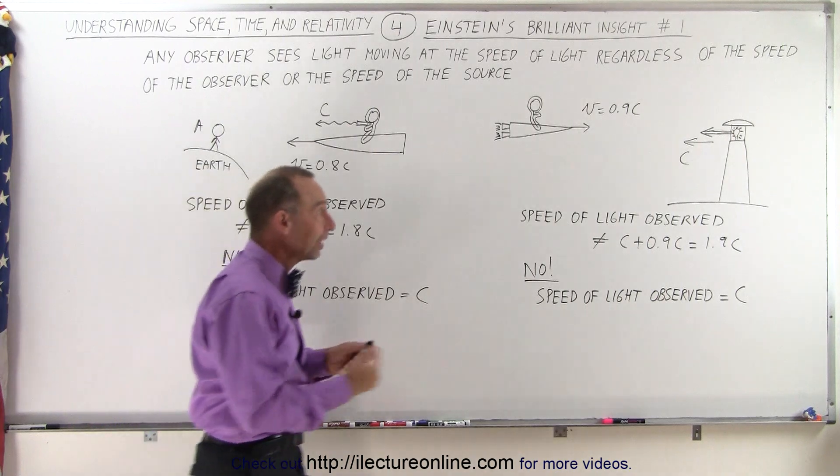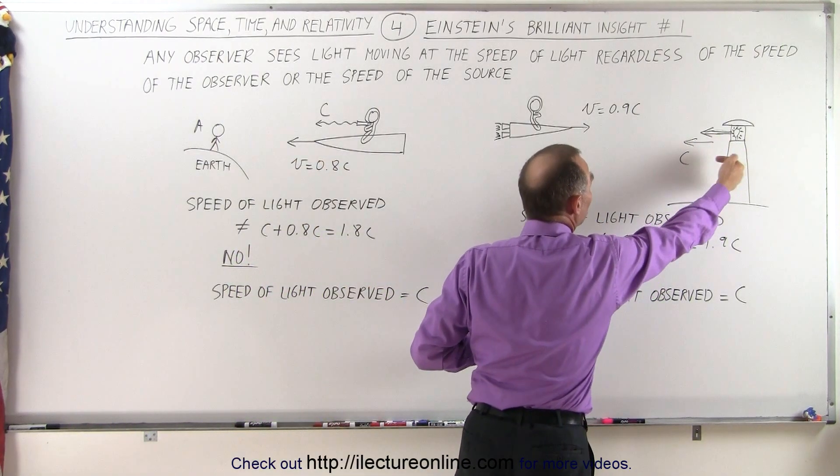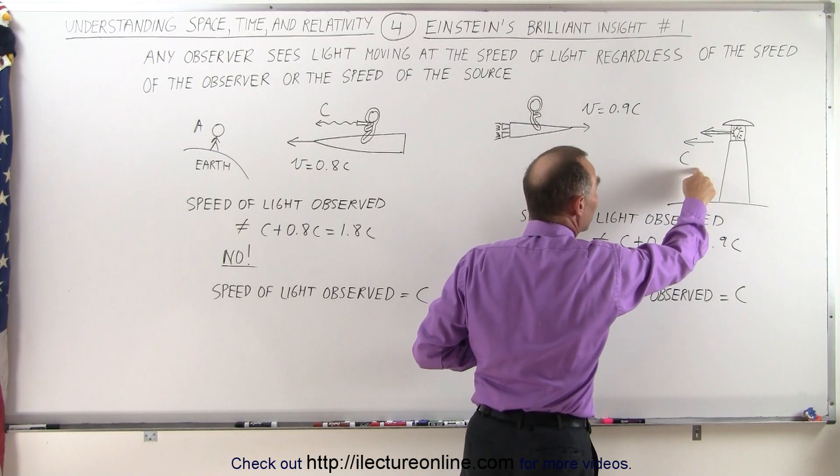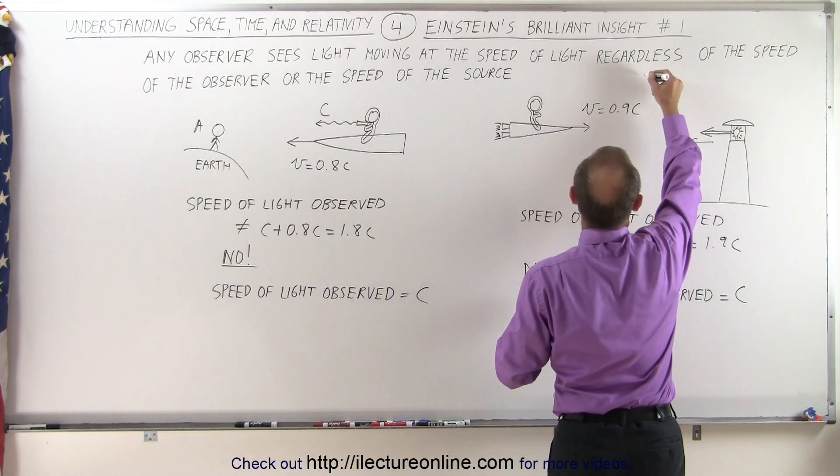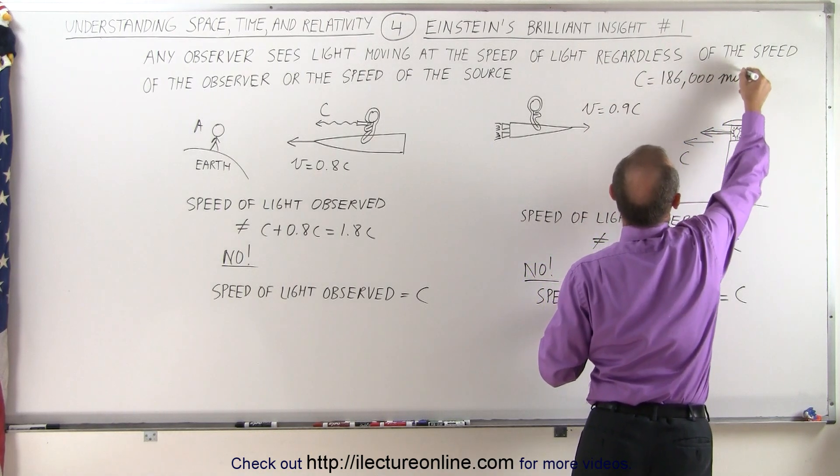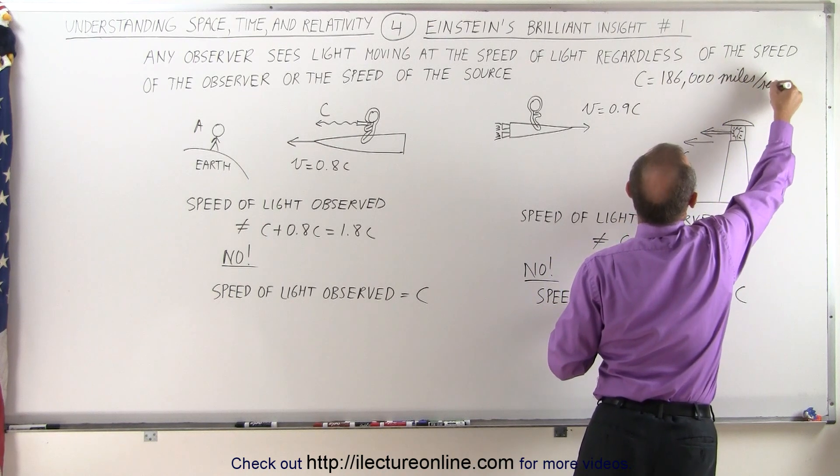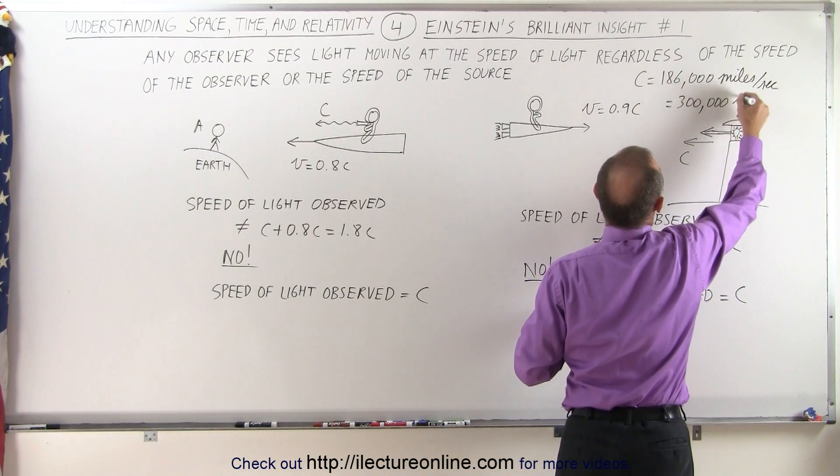In other words, let's say that we have a stationary source putting out a beam of light, moving at the speed of C, so C represents the speed of light. And for those who are not familiar with the speed, it's equal to 186,000 miles per second, which is quite fast, which in kilometers is equal to 300,000 kilometers per second.